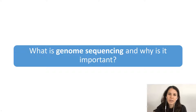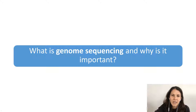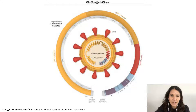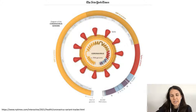Before I launch into the details of how we do the genome sequencing, I just wanted to briefly touch on what genome sequencing is and why it's important. This is a diagram from the New York Times. The outer circle here represents the genome of the virus. SARS-CoV-2 is a single-stranded RNA genome — it's about 30,000 nucleotides long. This inner circle here represents just the virus itself. When I talk about sequencing the genome, I'm talking about trying to sequence that entire 30,000 nucleotides.